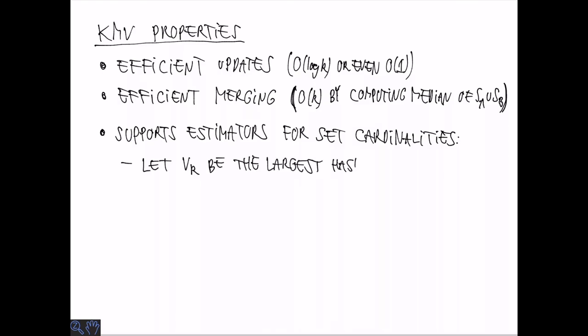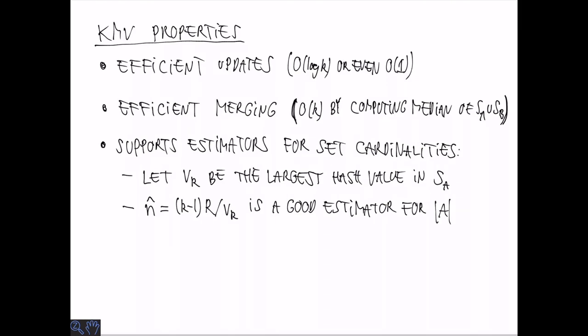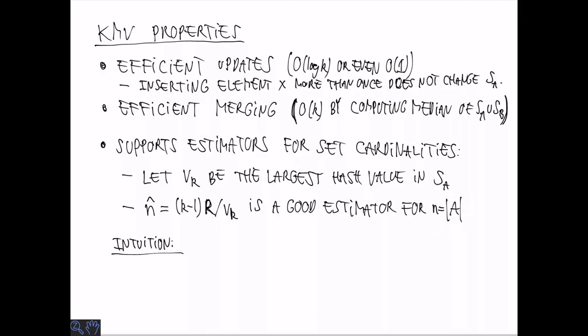The way this is done is that we look at the largest hash value among those stored. Remember we store the K smallest hash values and we take the largest one among those. This would be the Kth smallest among all hash values. Now, we can compute an estimator n hat where n is the size of the set as K minus 1 times R, this range, divided by this hash value VK. That turns out to be a good estimator for the size of A which we denote by n.